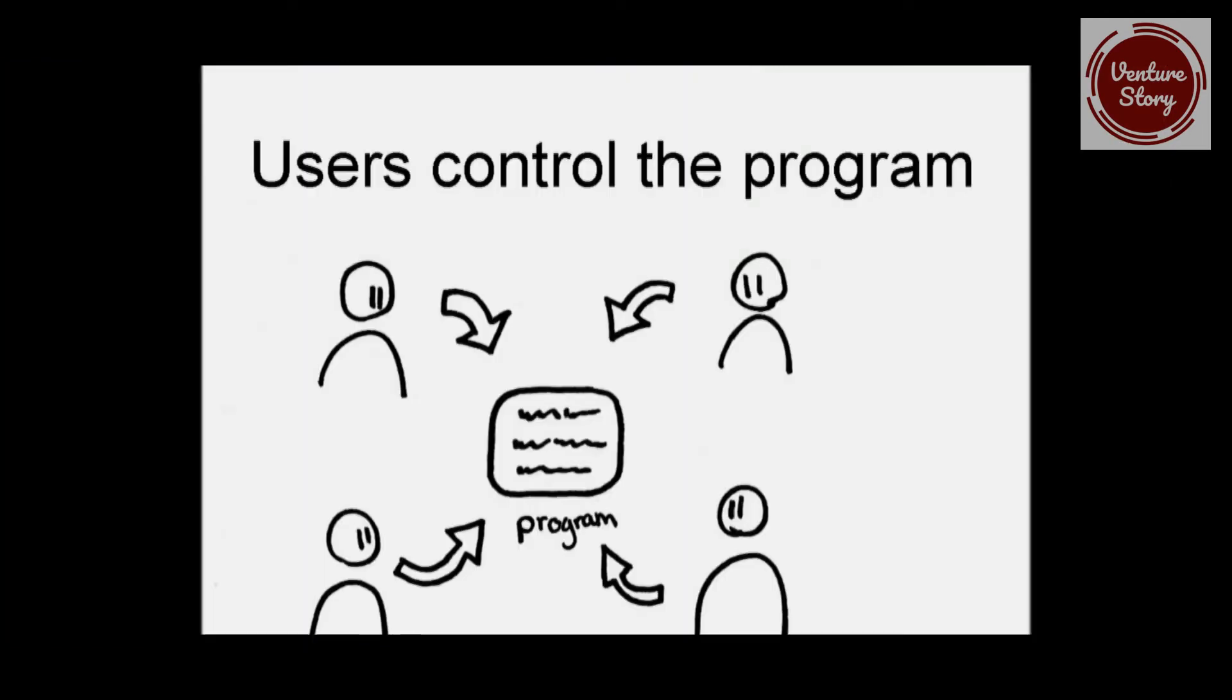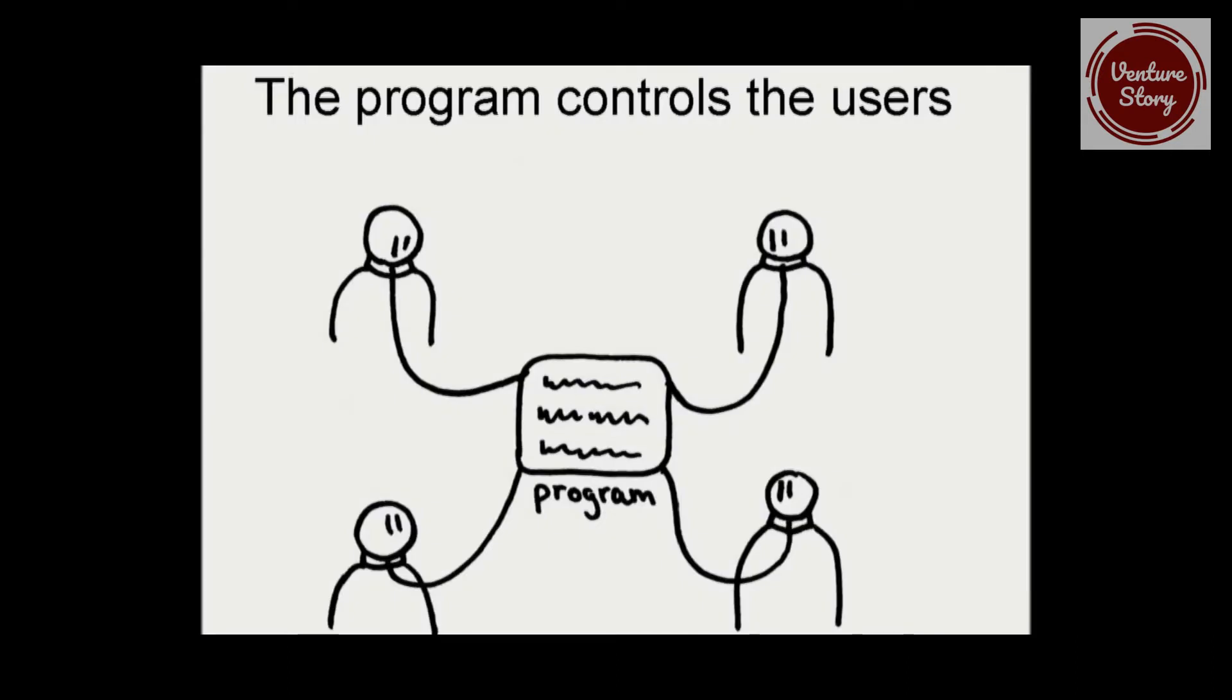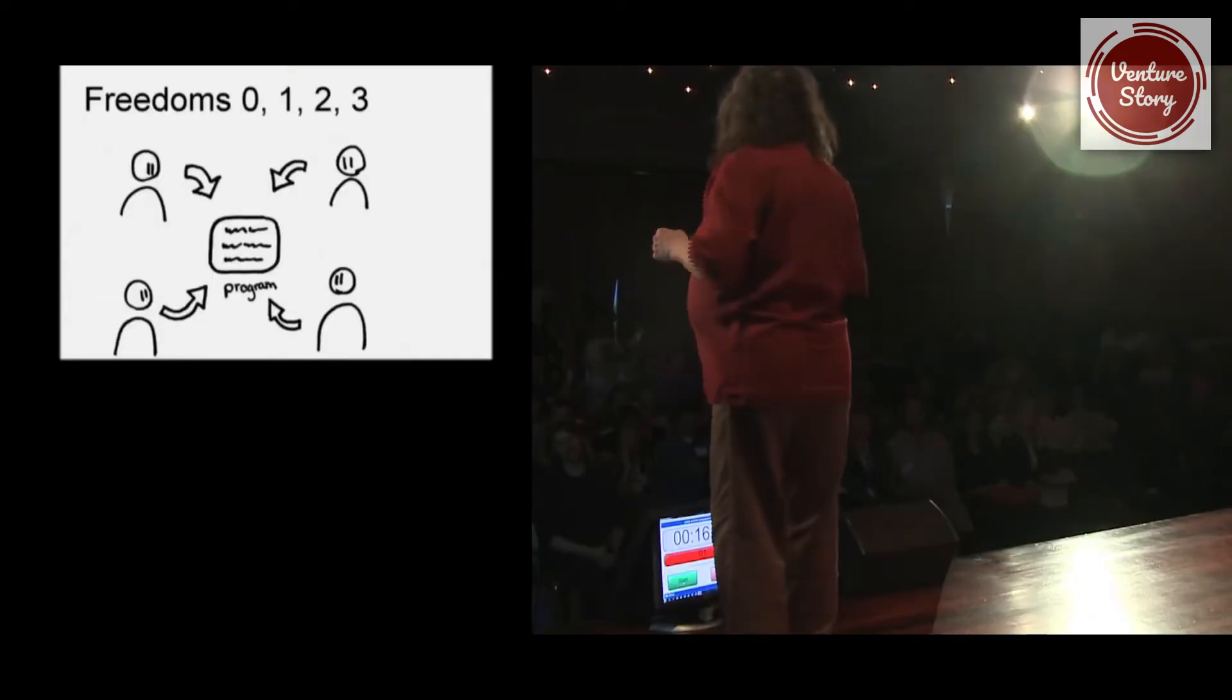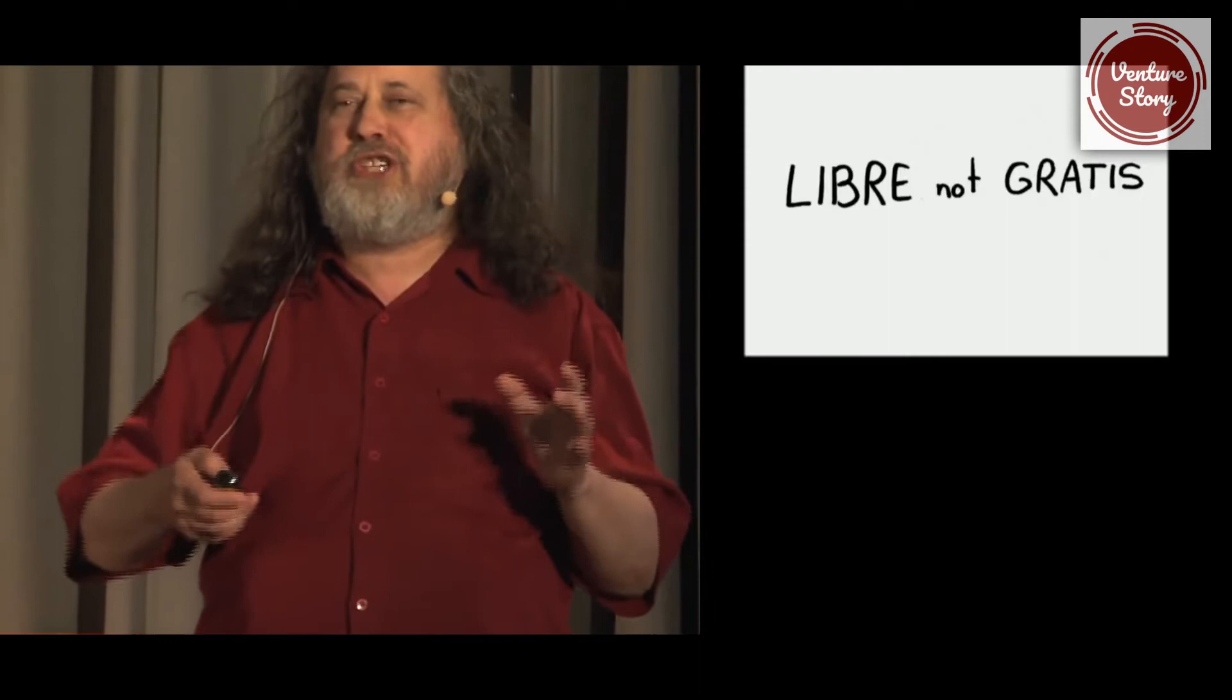With software, there are two possibilities. Either the users control the program or the program controls the users. It's inevitably one or the other. So in order for the users to control the program, they need the four essential freedoms. And that's the definition of free software.